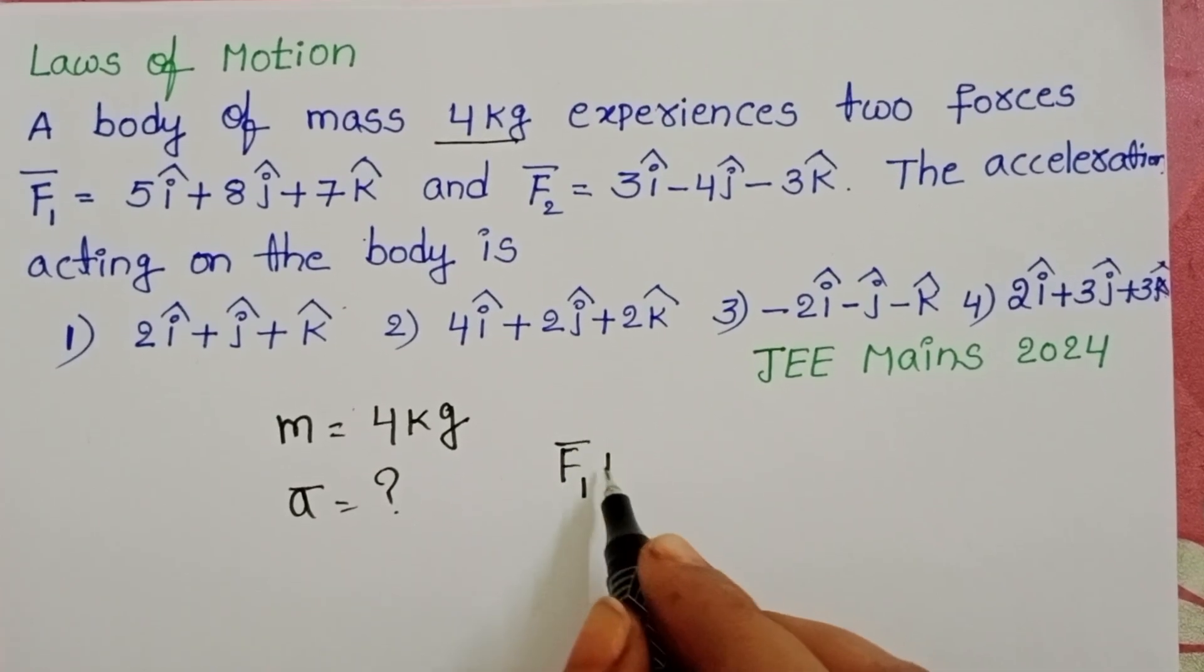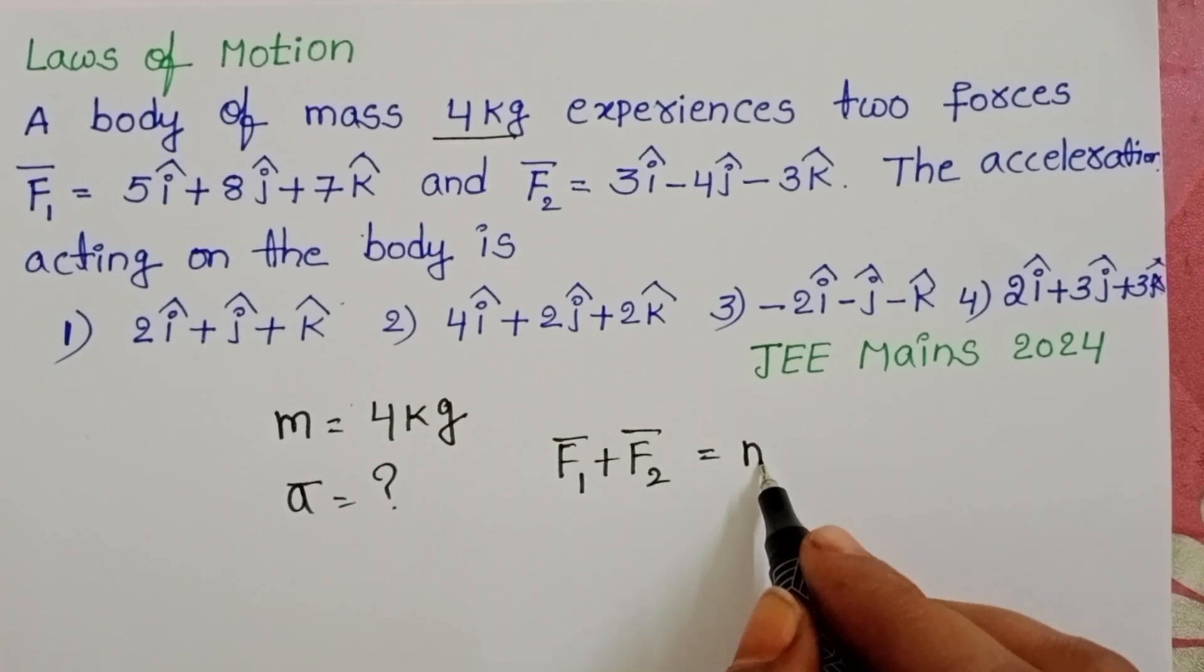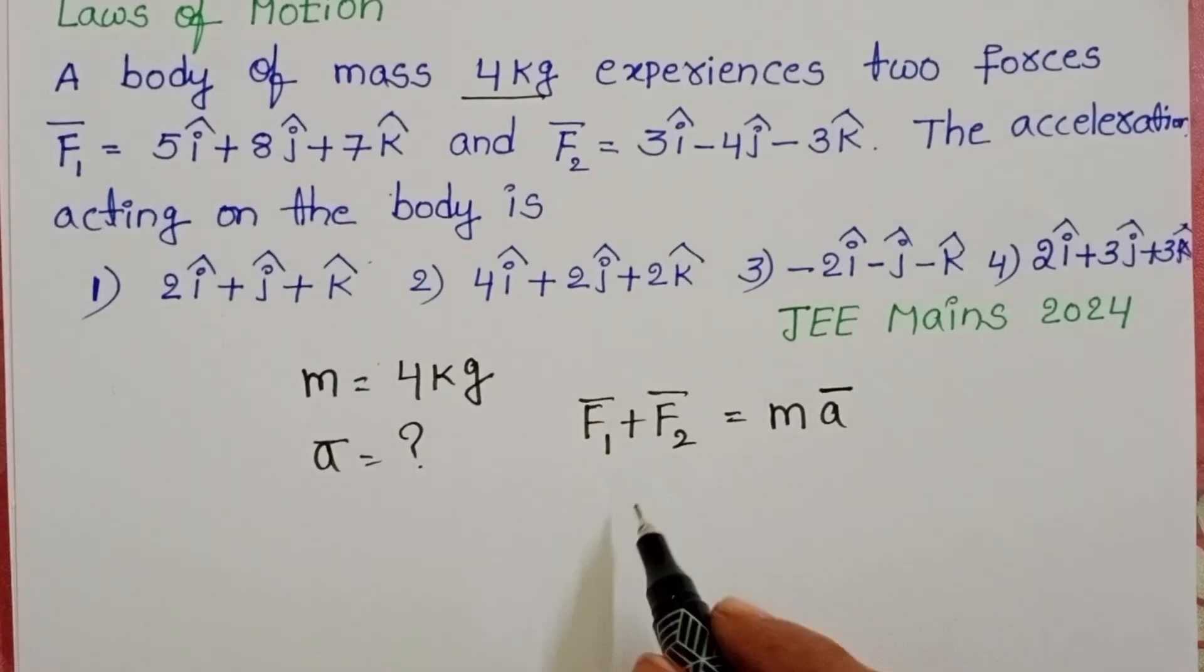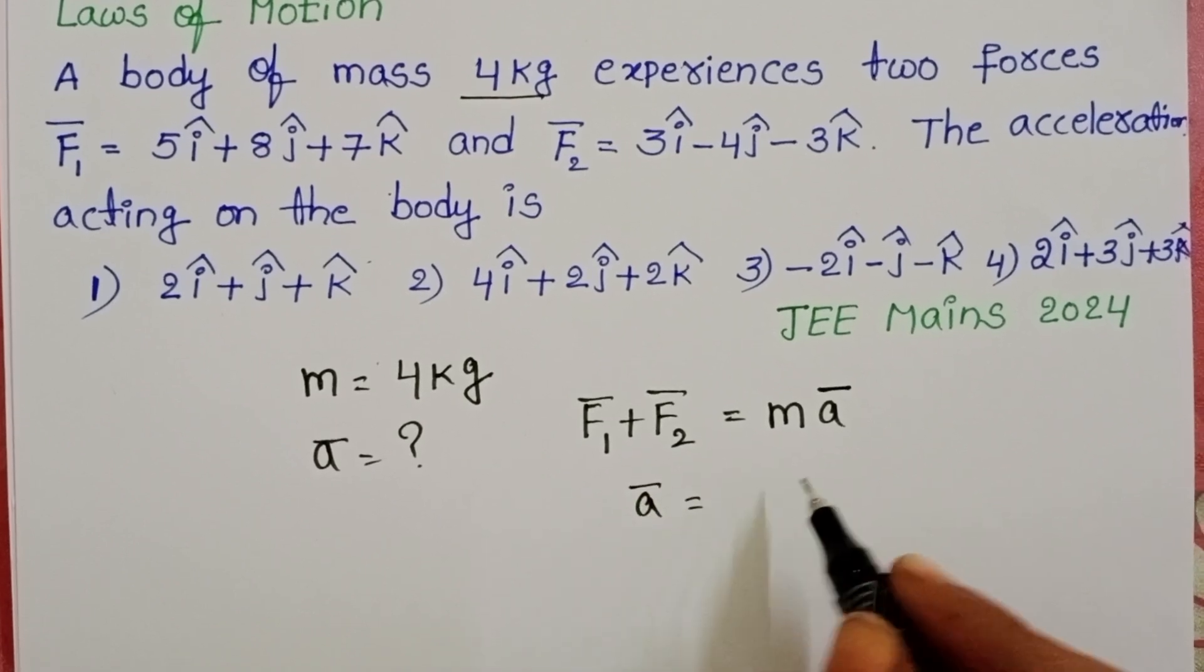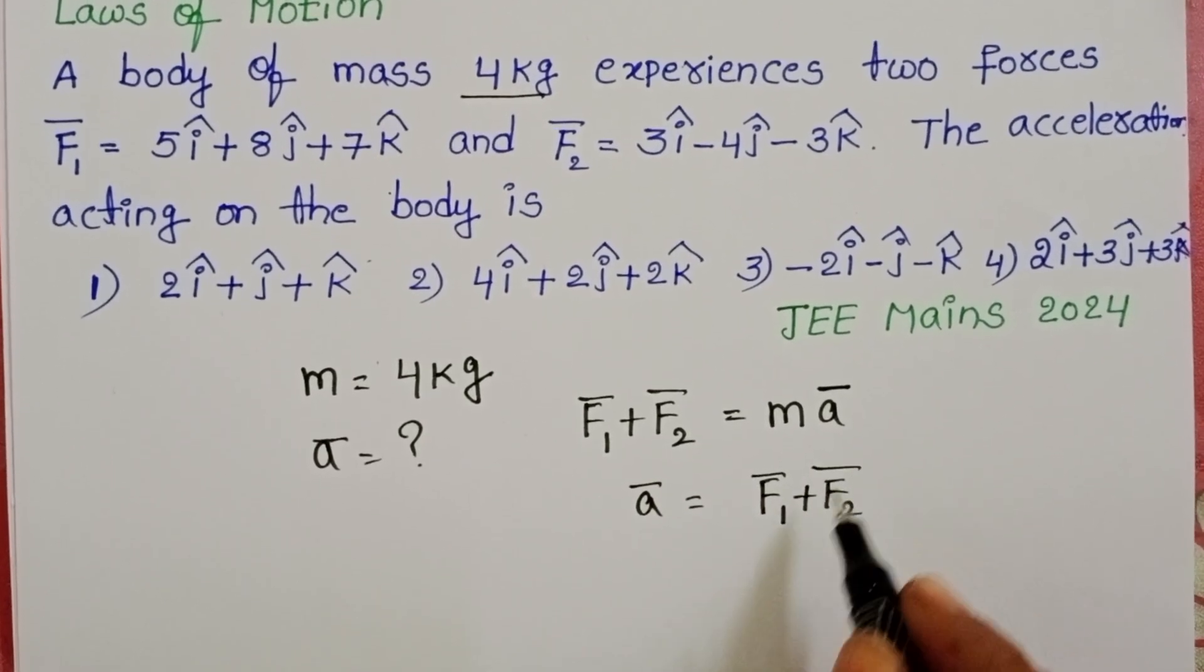F1 bar plus F2 bar equals mass of the body into acceleration. Acceleration is in vector form. A bar equals F1 bar plus F2 bar by M.